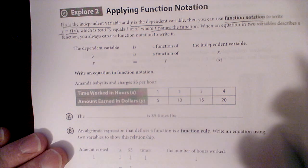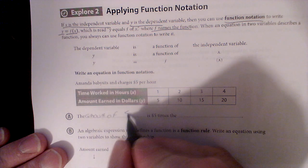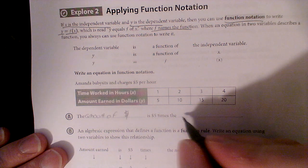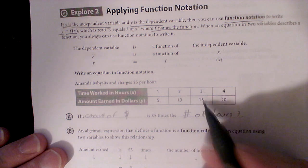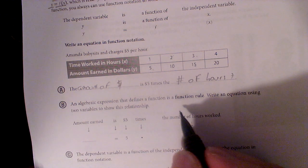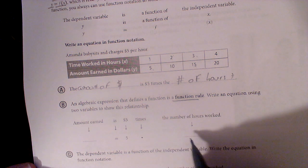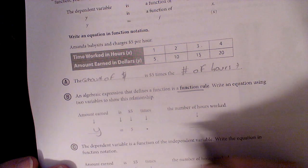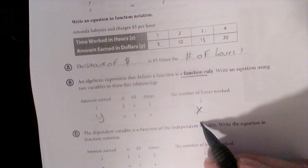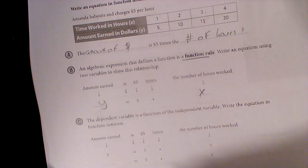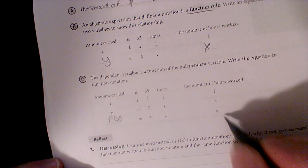Amanda babysits and charges five dollars per hour. The amount of money is five times the number of hours. We can see it here. One hour is five bucks, two hours ten bucks, three hours fifteen bucks. An algebraic expression that defines a function is a function rule. We're going to write an equation using two styles. We could say y equals five times x. That's probably how you're used to saying it. If I plug in one, one times five is five. If I plug in two, two times five is ten. But we can also say a function of the input of x is equal to five times x.